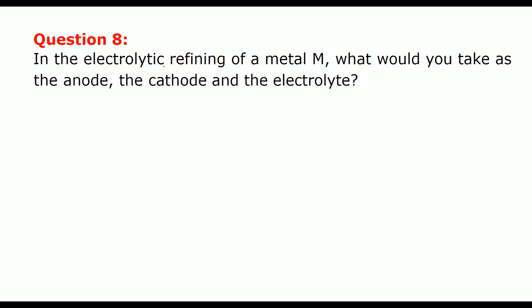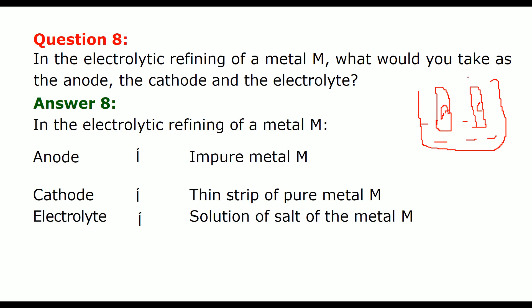In the electrolytic refining of a metal M, what would you take as anode, cathode and electrolyte? So the question is, this is anode, this is cathode. Here is electrolyte. Anode, cathode. Right. The first is anode. It has to be impure metal M. Cathode has to be pure metal M. And this solution, electrolyte solution should be the salt of metal M.